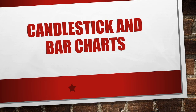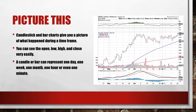Candlestick and bar charts. A candlestick or bar chart can give you a picture of what happened during a time frame. You can see the open, low, high, and close very easily. A candle or bar can represent one day, one week, one month, one hour, or even one minute. Here's a chart of Lulu and this is a daily chart — each bar represents one day.